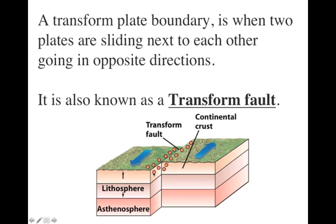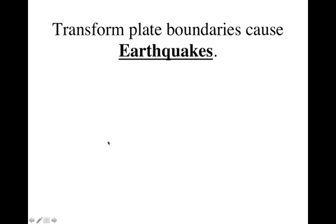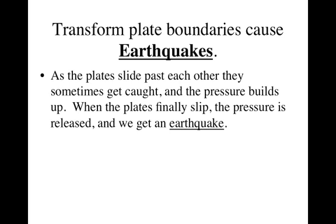Every one of these little dots is actually representing an earthquake, because the thing that forms at transform plate boundaries are earthquakes. It is probably the biggest cause of earthquakes — transform faults — although convergent boundaries can make them too. The way it happens is as the plates slide past each other, these are huge pieces of rock and they don't just slide past each other easily. They get caught and the pressure builds up, and when the plates finally slip through, you get a jerk. That pressure gets released and we get an earthquake.